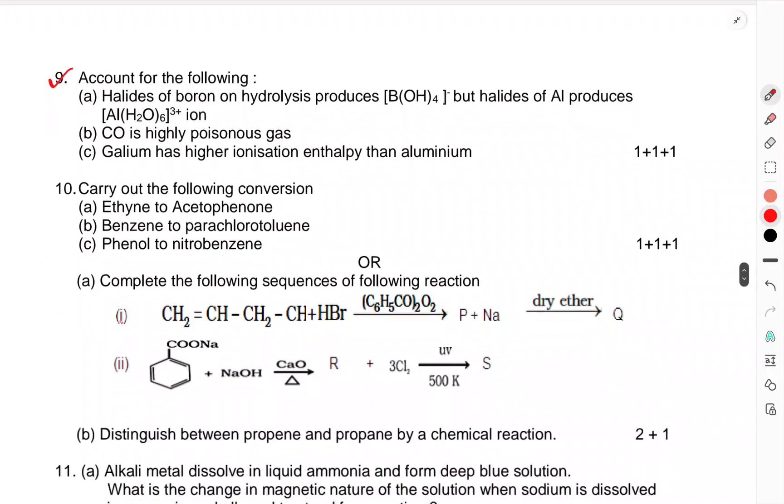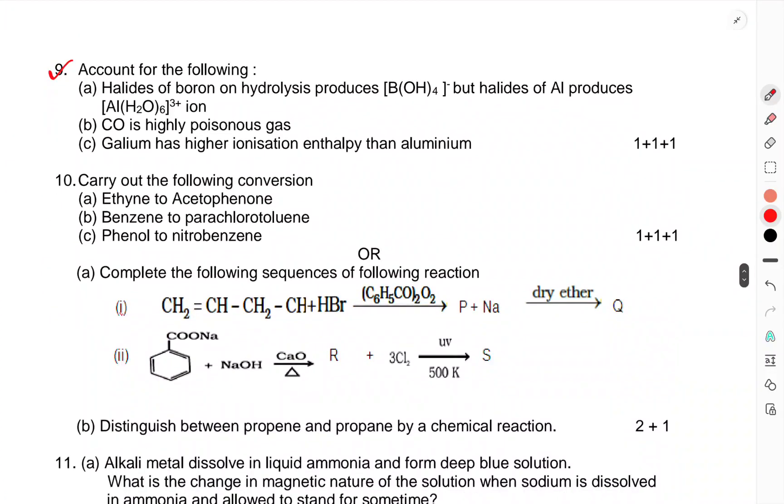Question number 9: Account for the following. Hydrides of boron on hydrolysis produces H3BO3 but hydrides of Al produces Al(OH)3. CO is highly poisonous gas. Gallium has higher ionization enthalpy than aluminum. Question number 10: Carry out the following conversions: ethyne to acetophenone, benzene to parachlorotoluene, phenol to nitrobenzene.